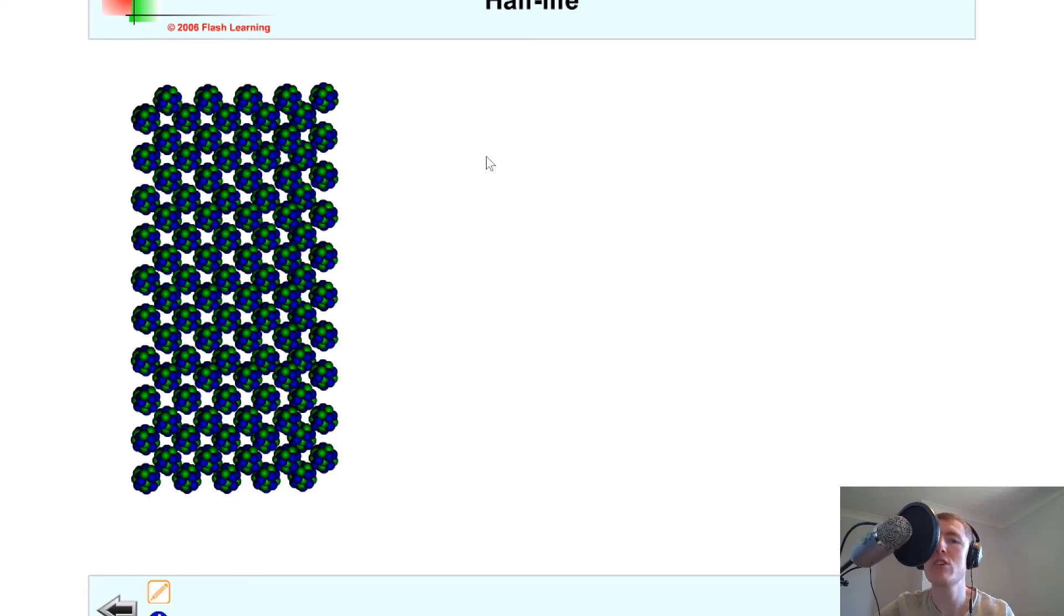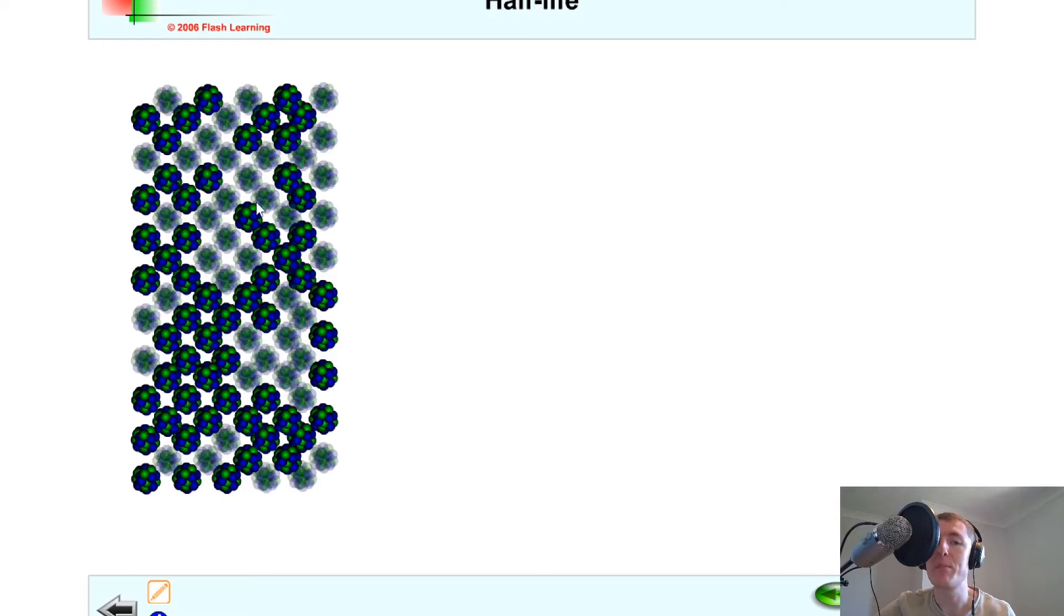To help you visualize this, I'm going to show you a quick animation. Imagine you've got all these nuclei in their source and they're going to start decaying randomly. What we mean by decaying is they are going to emit an alpha particle, a beta particle, or a gamma ray to become more stable.